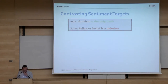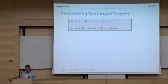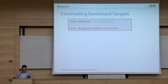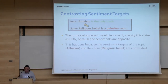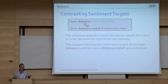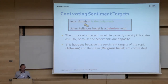But what happens in the following case? The topic is 'atheism is the only truth,' which has positive sentiment. The claim is 'religious belief is a delusion,' which has negative sentiment. So according to our method, we would predict it's a con claim — and in this case, that would be an error. The reason is that we ignore the fact that atheism and religious belief are contrasted concepts, which means that saying something negative about religious belief actually supports atheism. We need to take this into account.